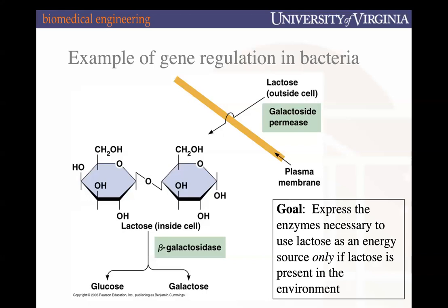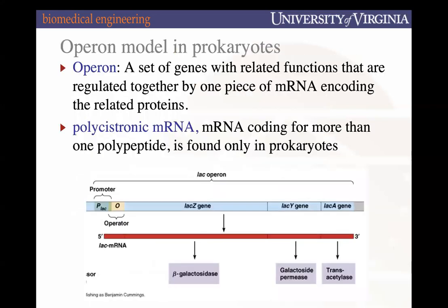It costs energy to produce these components, so you want to express them only when they're needed. There's a regulatory mechanism controlling the expression of galactoside permease and beta-galactosidase so they're only made when required. The operon model helps explain how this works.